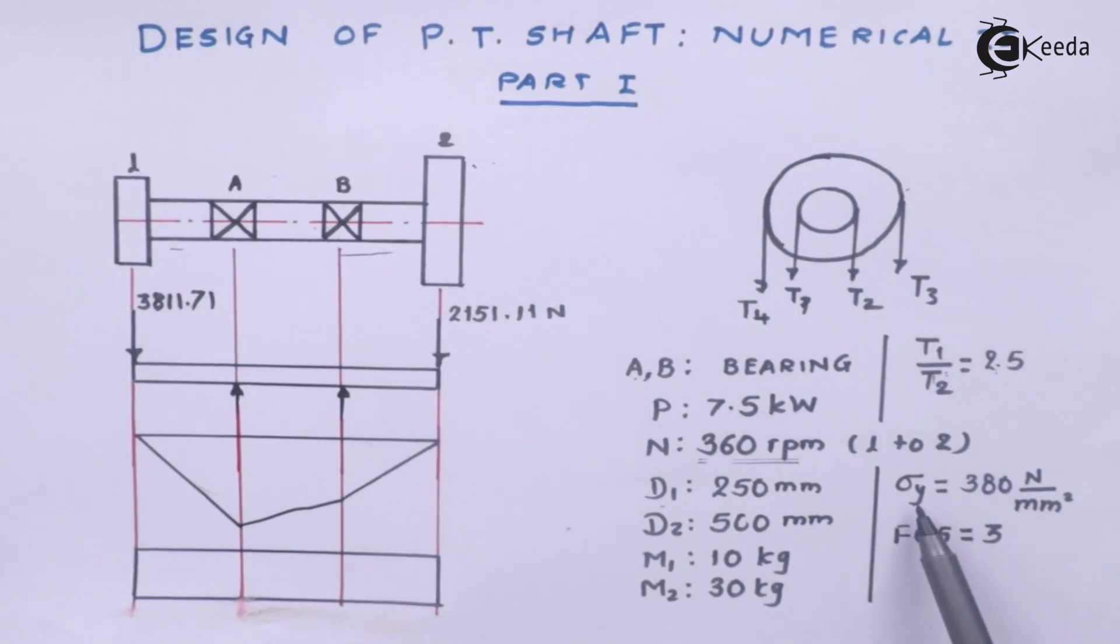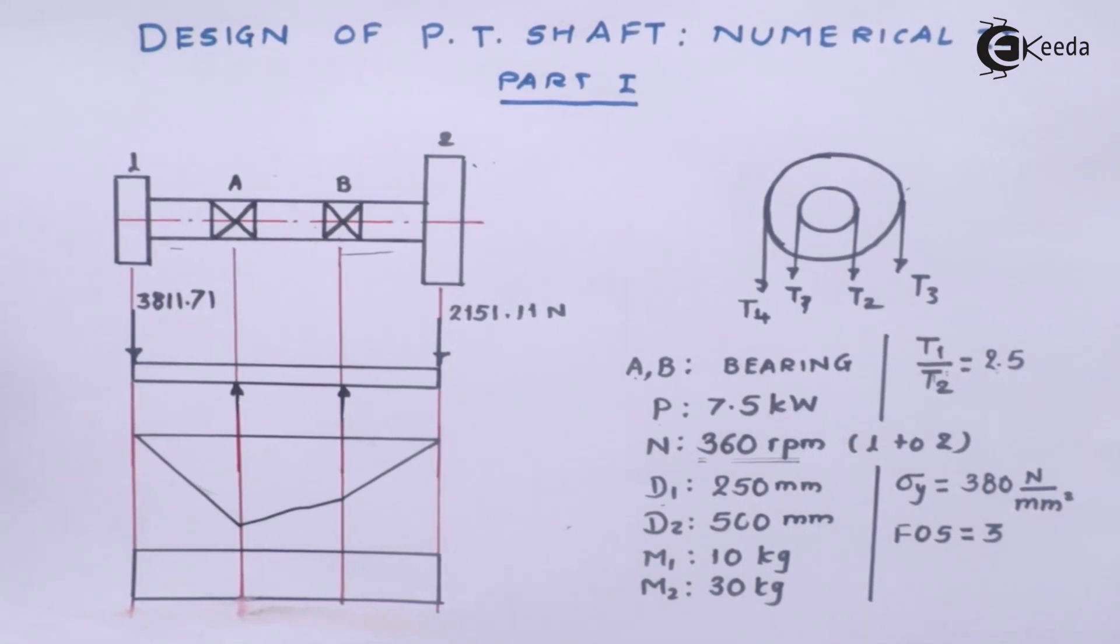The next thing they have given is the material properties. So they have not specified the material, instead they have given the properties associated with the material. 380 N per millimeter square is the yield strength and factor of safety should be 3. With this data let us proceed ahead for the design of shaft.